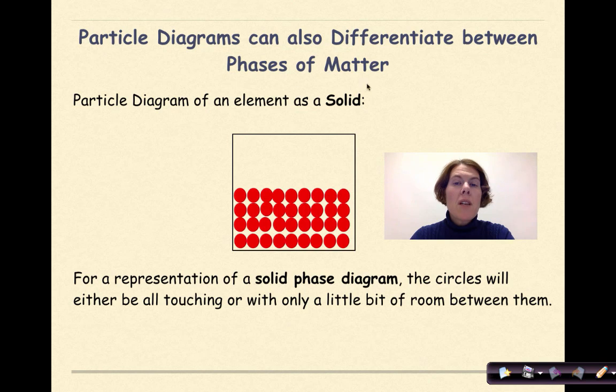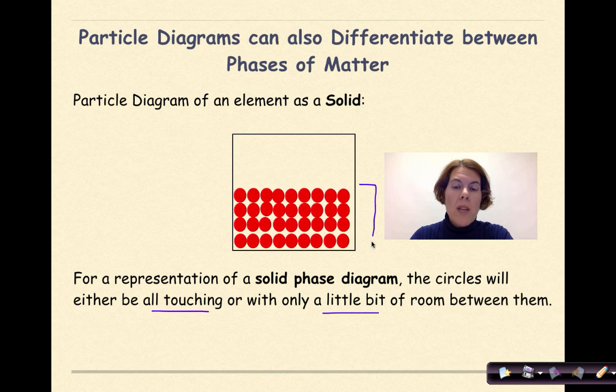Particle diagrams can also differentiate between phases of matter. Here we have the particle diagram of an element as a solid. For a representation of a solid phase diagram, the circles will either be all touching or only with a little bit of room in between them. So this right here would represent a solid.